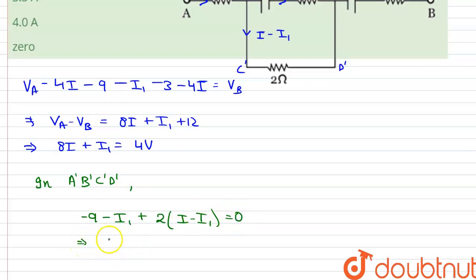And this implies that 9 is equals to 2I minus 3 times I1. Therefore, let us assume that this is equation 1 and this is equation 2. And on solving equation 1 and 2,